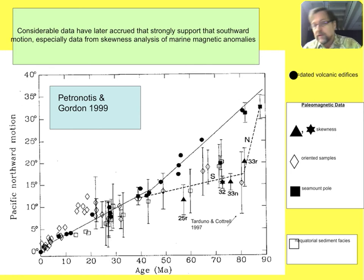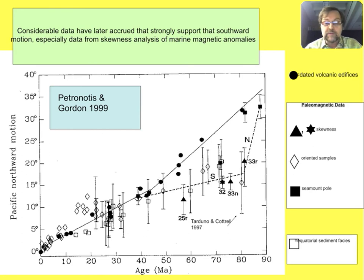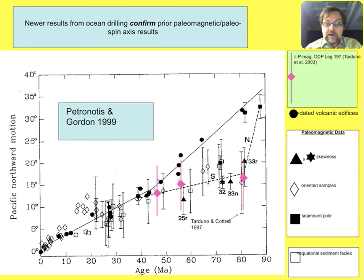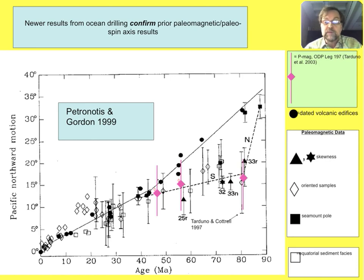There are more recent results from deep-sea drilling — about 10 to 12 years ago — that also indicated southward motion of the Hawaiian hotspot, which can be used to check our skewness results. On the next slide I simply lay them over: these are results from Leg 197, Tarduno et al. 2003, and you can see they're in very good agreement with our 25R, our 32, and our 33N and 33R results. Along with the deep-sea drilling results on Shatsky Rise, all are consistent with what we get from skewness. It's just that we can look at a lot more ages and get more compact confidence limits with skewness data for a lot less money than is possible with deep-sea drilling.